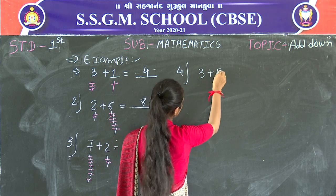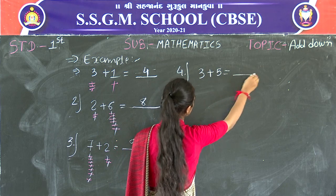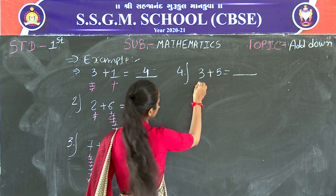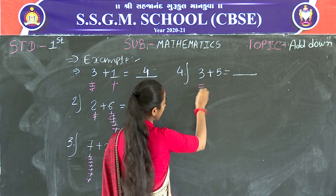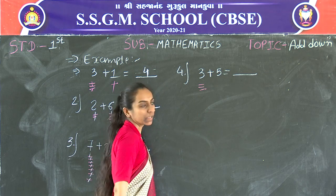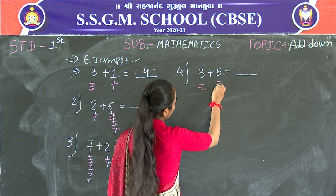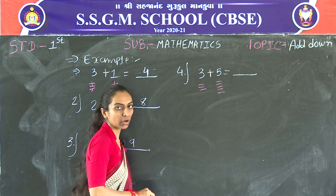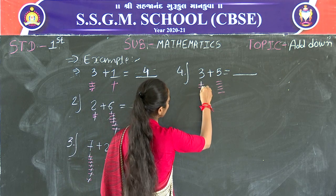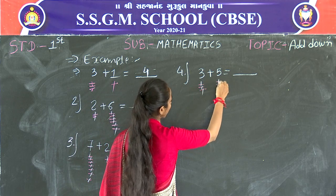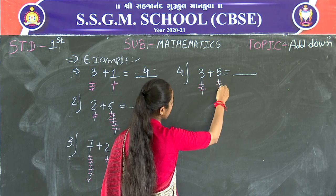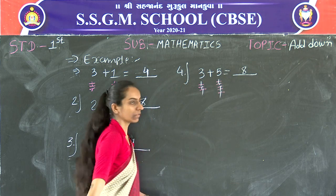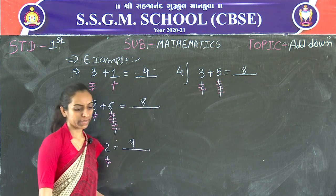Next: 3 plus 5. Draw 3 lines: 1, 2, 3. Then draw 5 lines: 1, 2, 3, 4, 5. Count all the lines: 1, 2, 3, 4, 5, 6, 7, 8. 3 plus 5 is equal to 8.